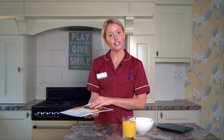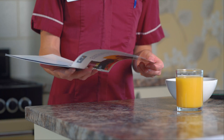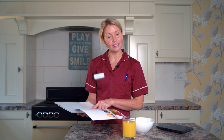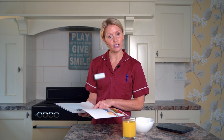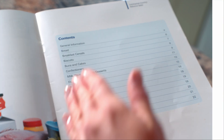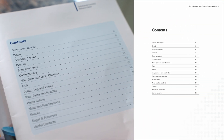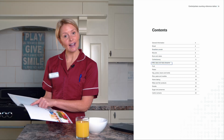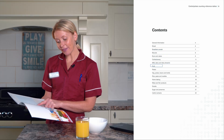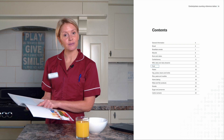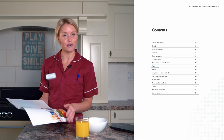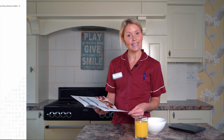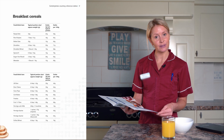If we turn to the contents at the front of the book we can see that the foods are listed in categories and also in alphabetical order. As you can see here we can find breakfast cereals, we can also find milk, dairy and dairy desserts, and then fruit. So we will be able to find the foods from my breakfast serving in here. So firstly let's take a look at breakfast cereals.